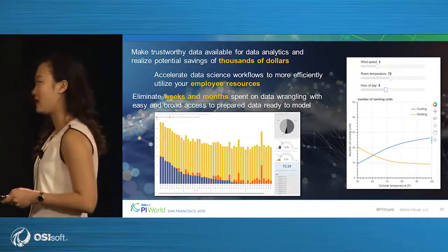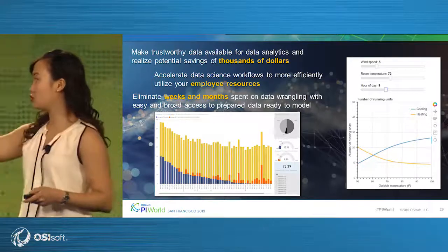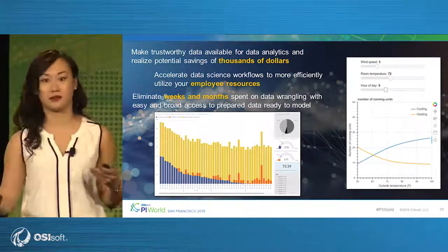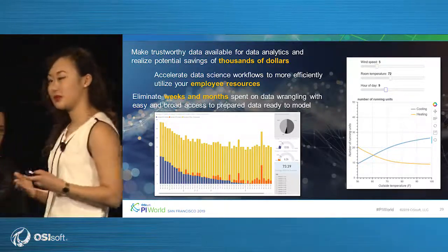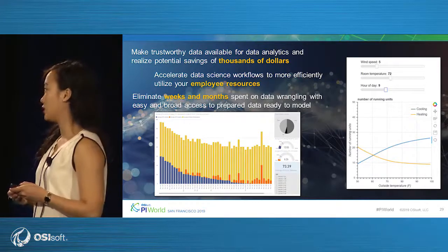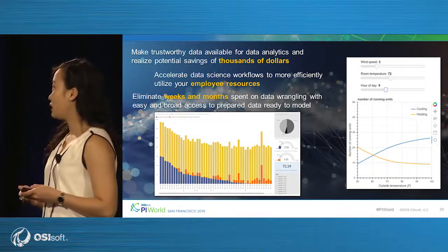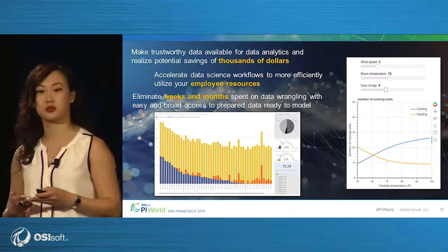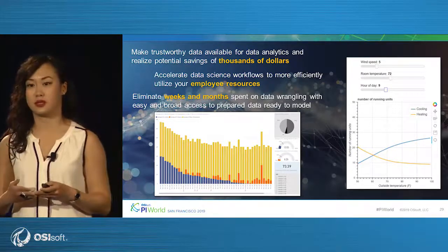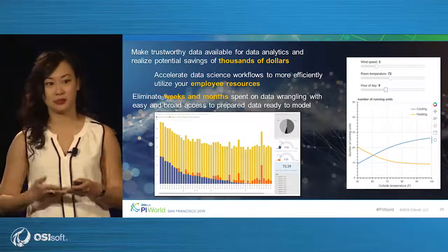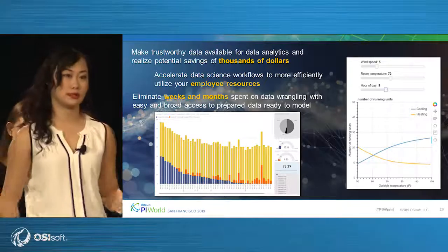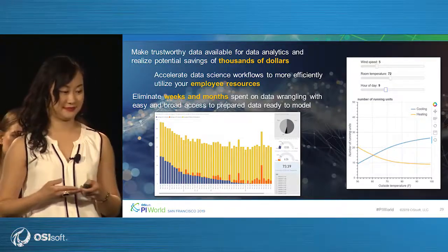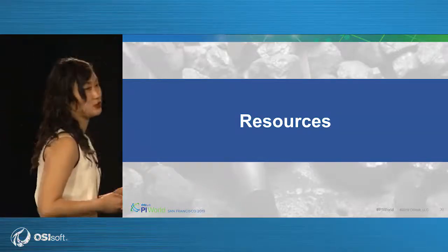To summarize, today we showed you two types of use cases — business intelligence reporting and process modeling and predictions — with two of our tools: one available today and another coming soon. With these tools we can enable the outcomes we talked about earlier: making trustworthy data available and realizing potential savings of thousands of dollars or saving the environment; accelerating your data science workflows to more efficiently use your employee resources for things they're experts in; and eliminating weeks and months of mundane tasks in getting, preparing, and making data ready for analysis.